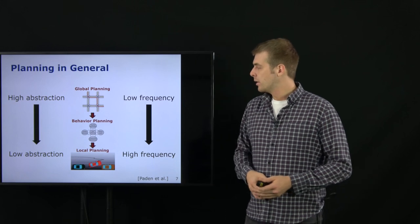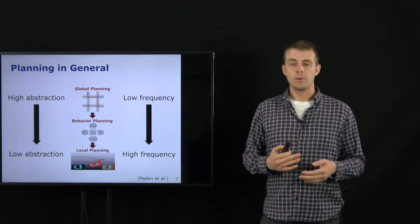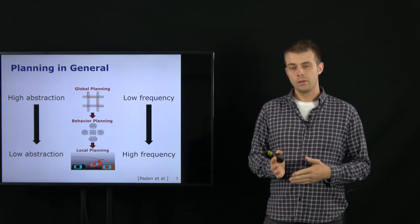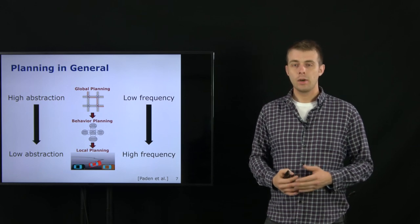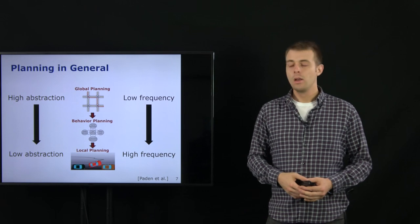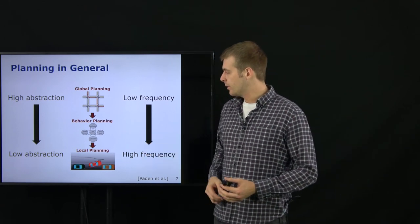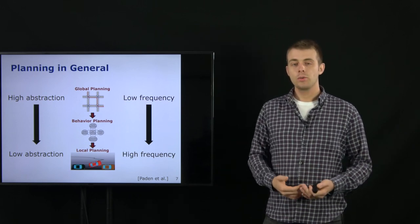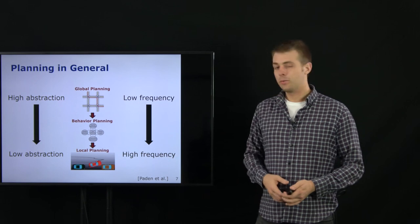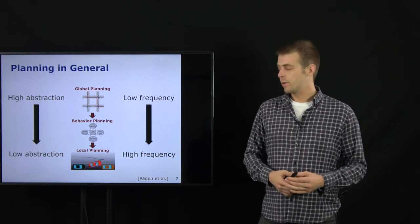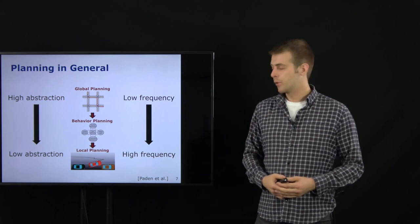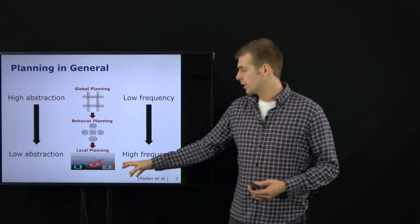In the middle we have the behavior planning, which handles different situations — for example at an intersection or on a highway. The behavior planner decides whether to stay behind a vehicle or to overtake by a lane change. All these maneuvers are handled in the behavior planner, which runs at a mid frequency and has a mid abstraction level. Below, the local planning outputs the actual trajectory the car wants to follow at a high frequency and low abstraction level, replanning frequently to avoid collisions.